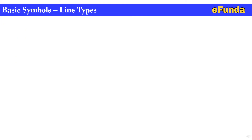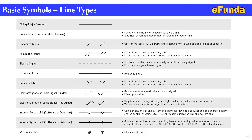In this slide we see basic symbols and line types. A complete table defines various kinds of lines. The major process piping is shown by a dark thick line; connection to process is a minor dark line with a thin line. Functional diagram continuously variable signals, electric schematic, ladder diagram signal, and power rail use an undefined signal line — a single line through two cross lines — used for process flow diagrams where the type of signal is not of concern. Pneumatic signal is a dark line with two cross lines. Field thermal element capillary tube or field sensing line between pressure seal and instrument is also shown.